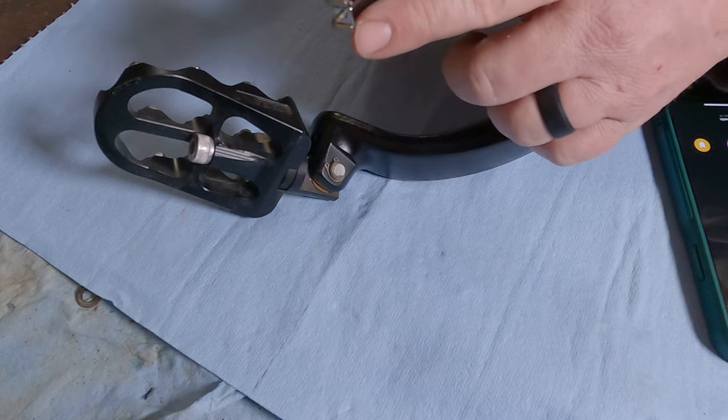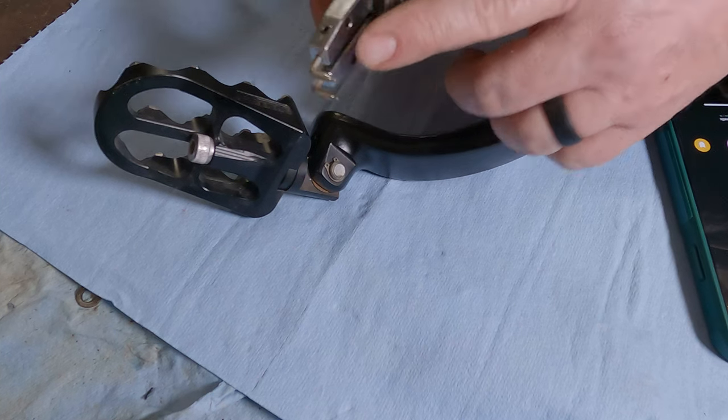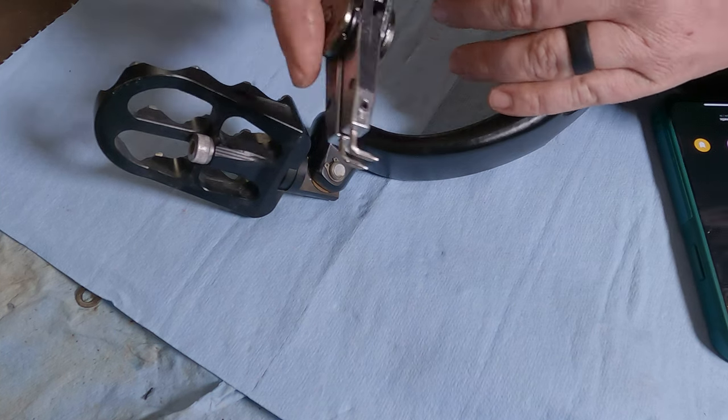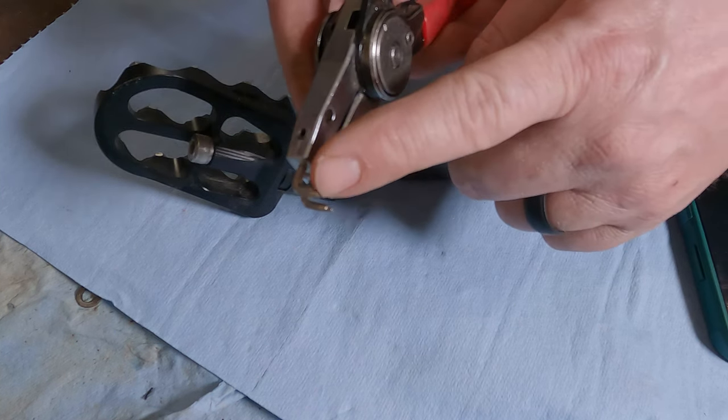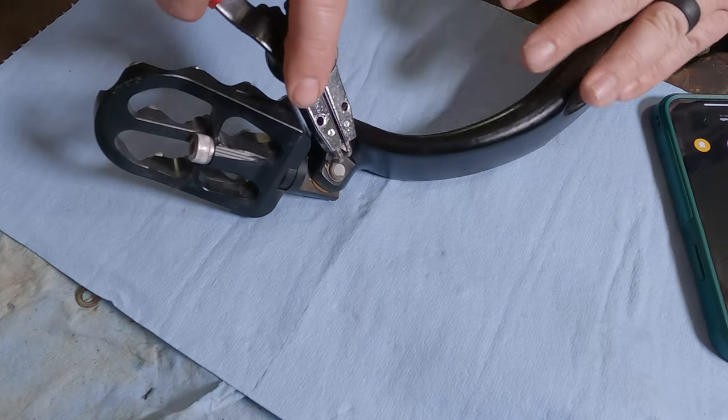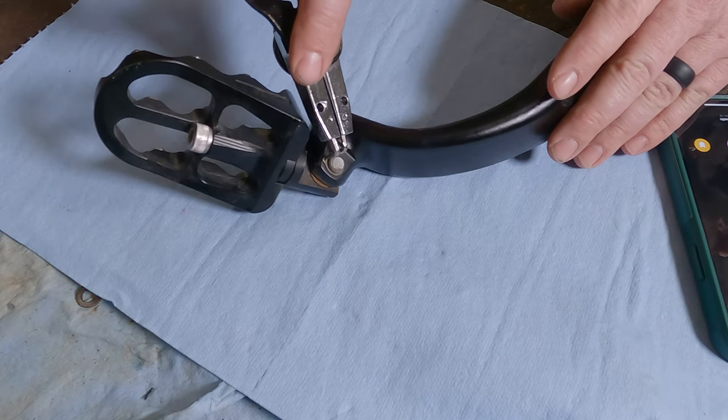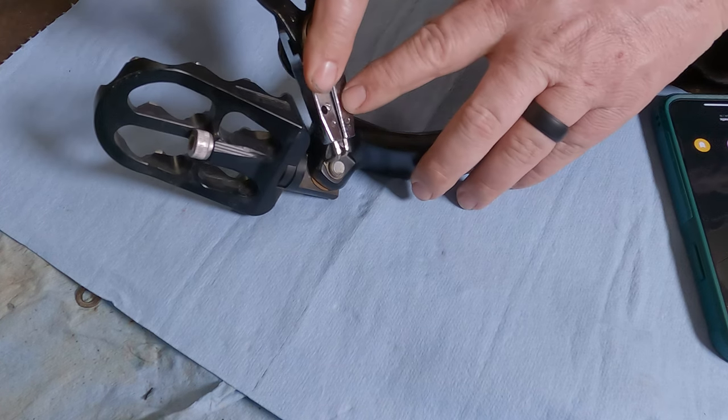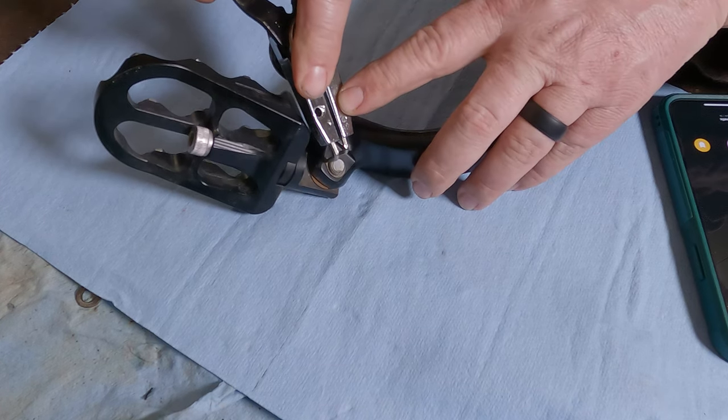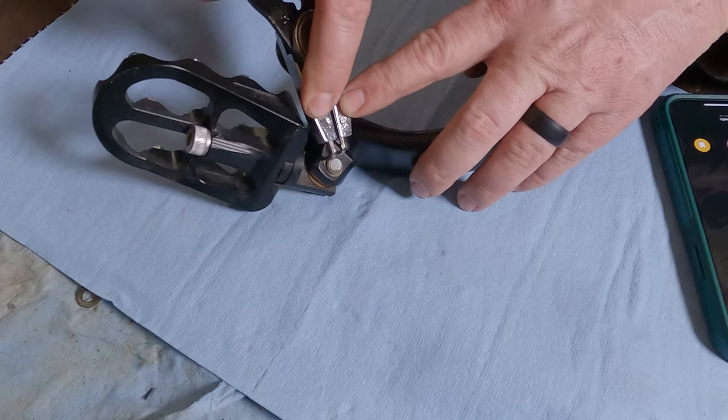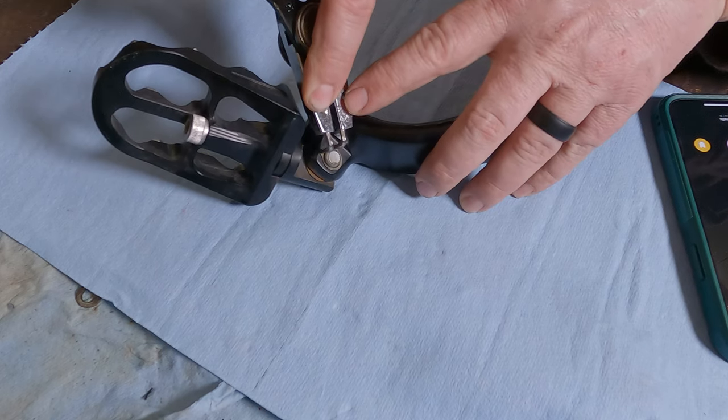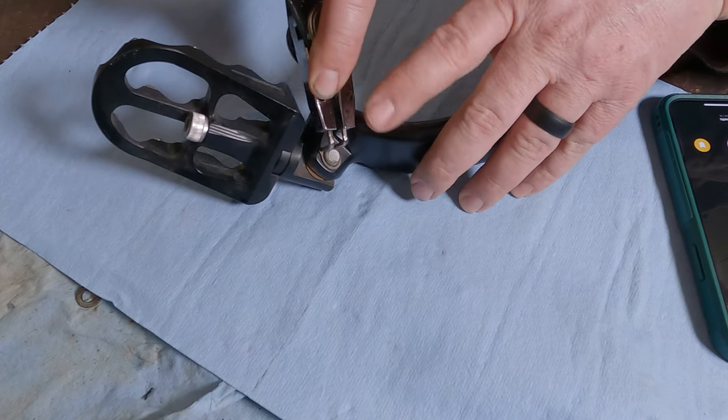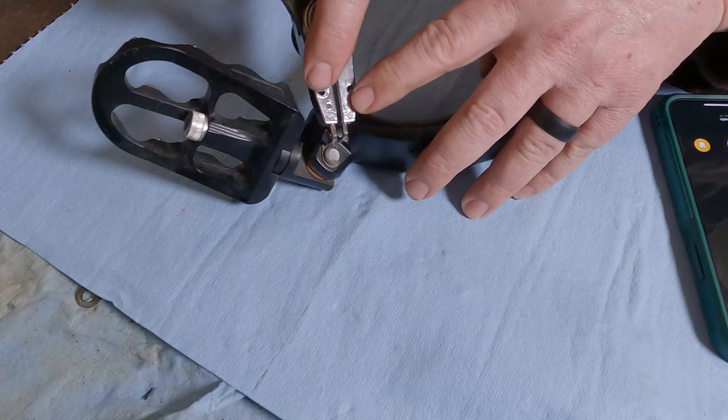I'm going to take the two pins here on the snap ring pliers. Take the two pins here. Hopefully the lighting is okay. Put them down into the eyelets and squeeze and you'll see the snap ring spread apart.